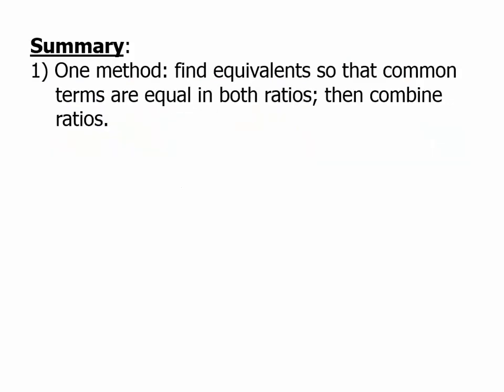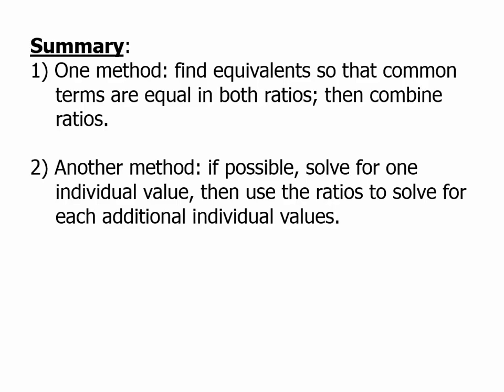In summary, one method is to find equivalent ratios so that the common terms are equal in both expressions and then combine them. And this is most useful if what we're looking for is purely ratio information. Another method, if we're given an actual count, then we can solve for individual values. And then we can either use the algebra or solve directly for the values. And sometimes we have to combine both of these methods, especially if you're given information about a sum or a difference of two different groups.